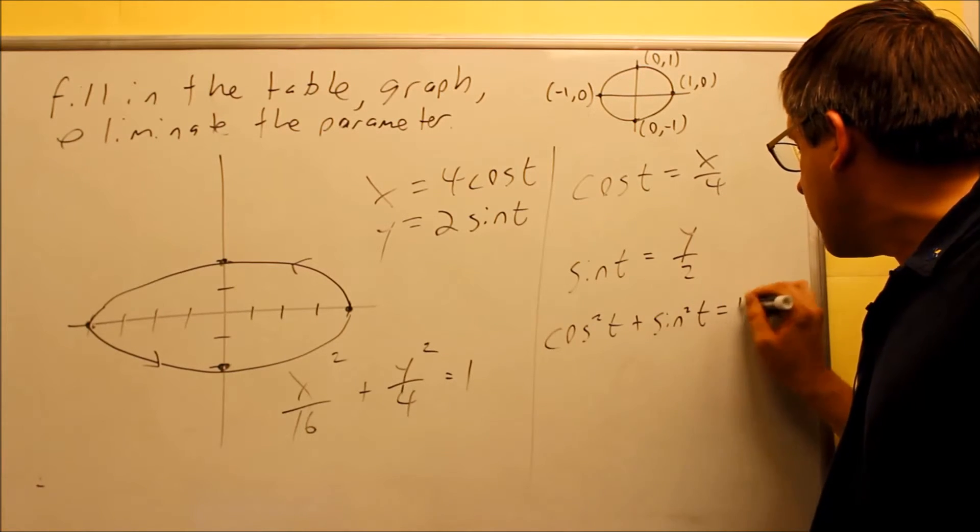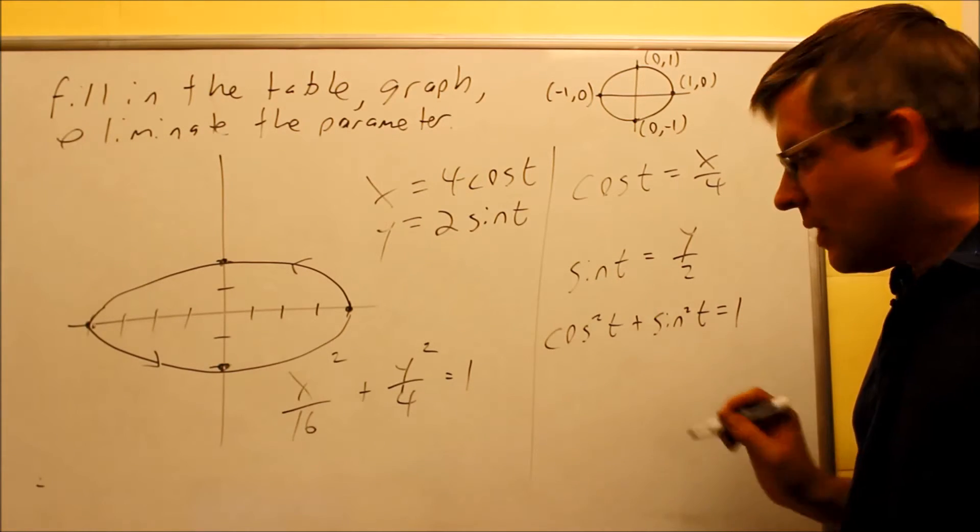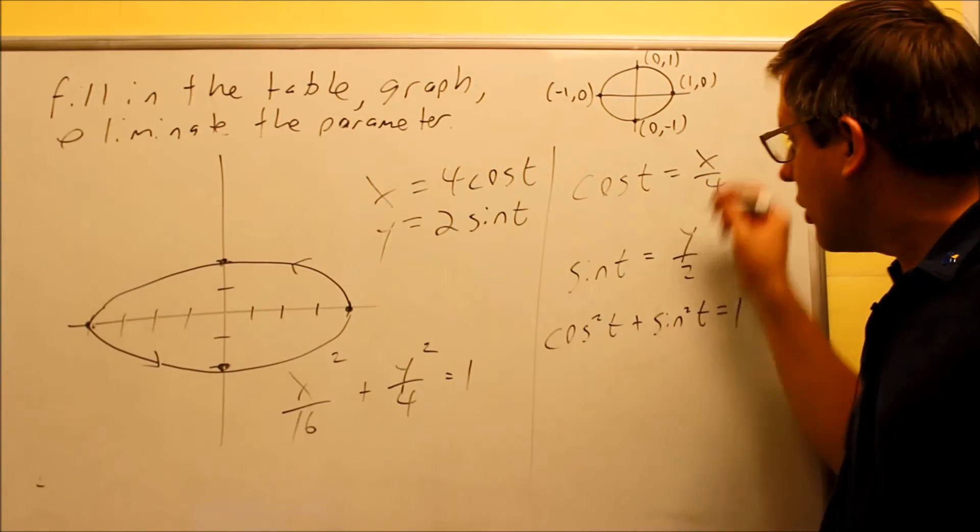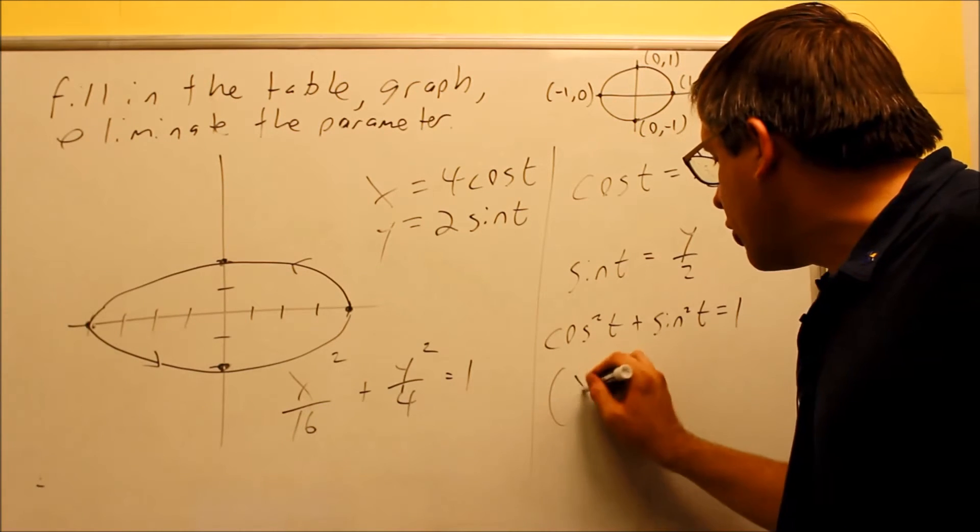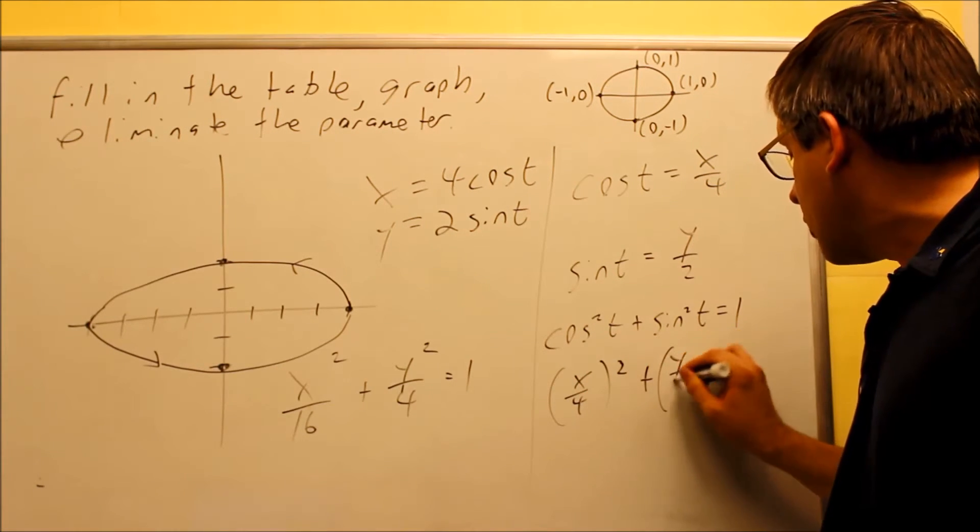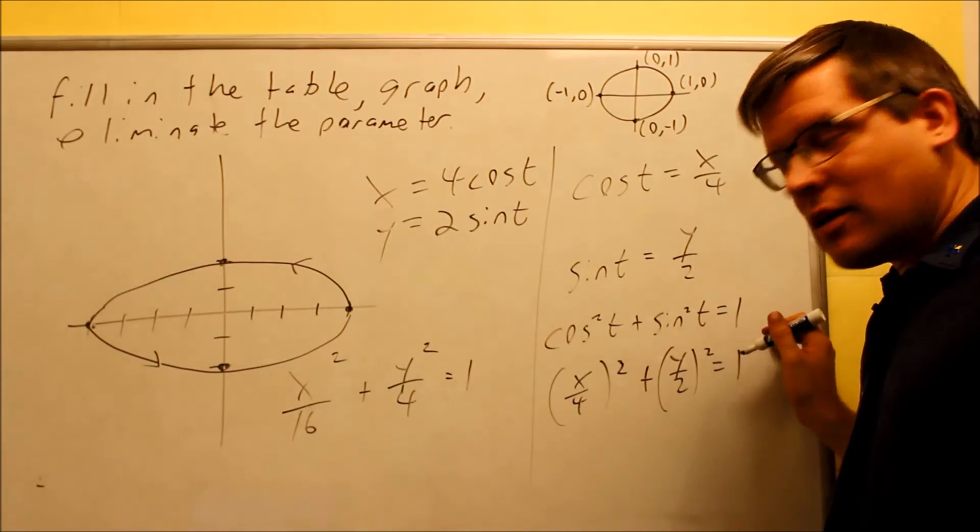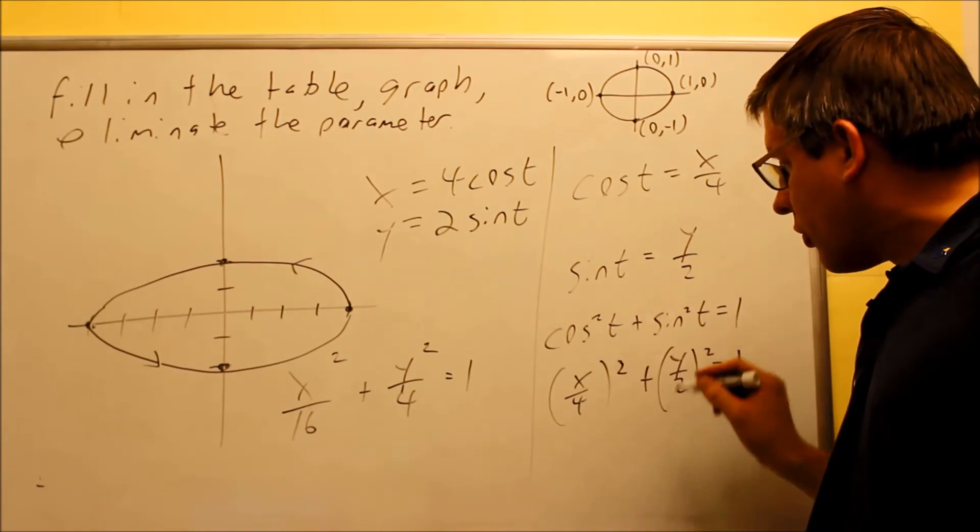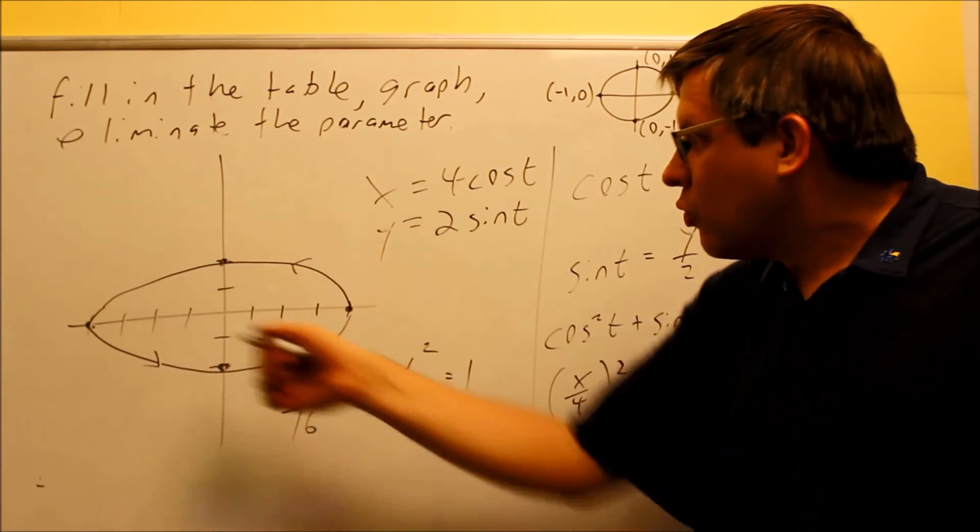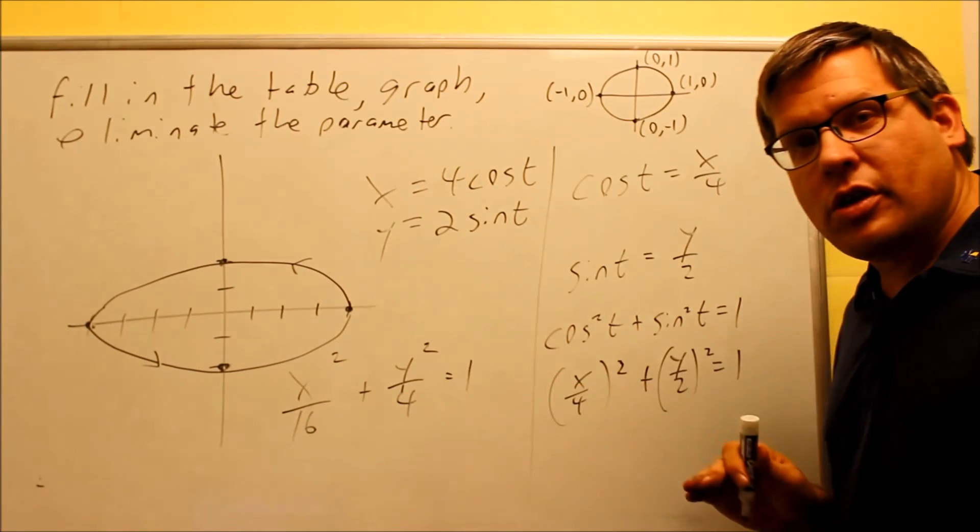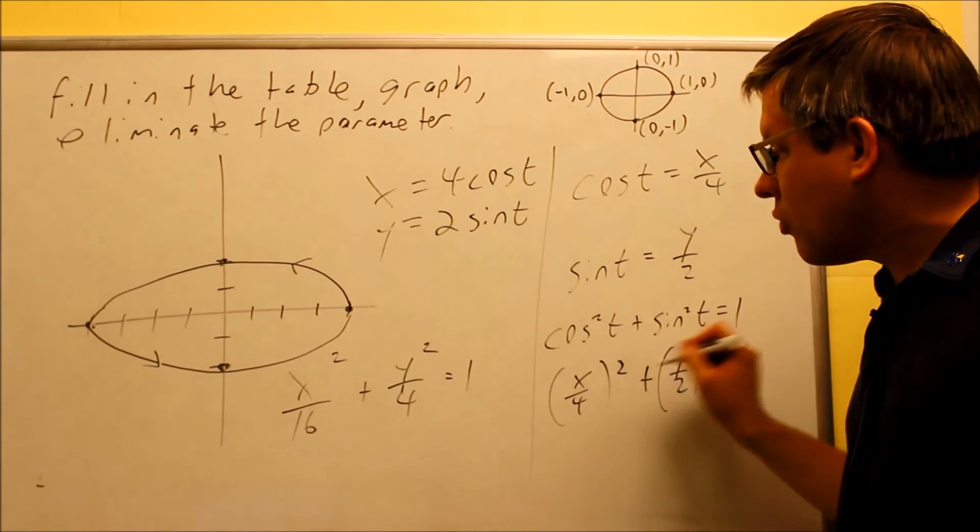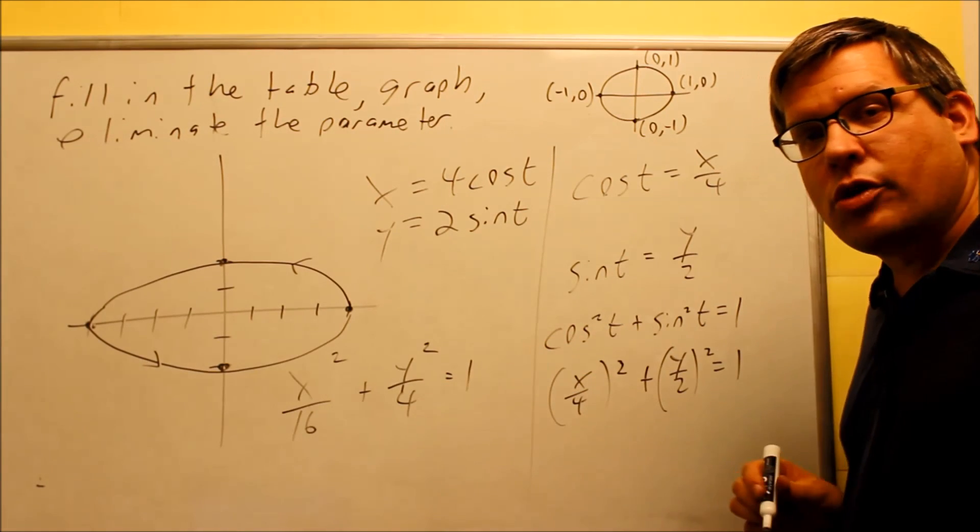So if we use this identity, we already have cosine and sine solved for already. So therefore, we can go ahead and stick both of these in there. What would you get? (x/4)² + (y/2)² = 1. So now that we have that, if we square both of those, we get exactly the same answer as this one. So again, you can do that both ways. You can either write the formula directly from the ellipse and get that, or again, we can do this more algebraic process. So either way, you're going to get the same exact answer when you eliminate the parameter.